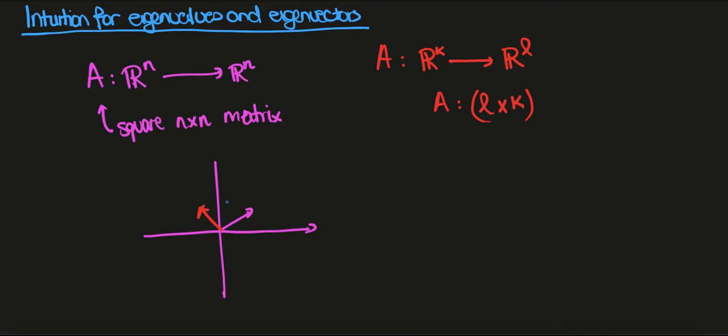So what we want to understand is when or can we change the coordinates of this axis so that the matrix becomes extremely simple or the operator maybe just becomes multiplication.